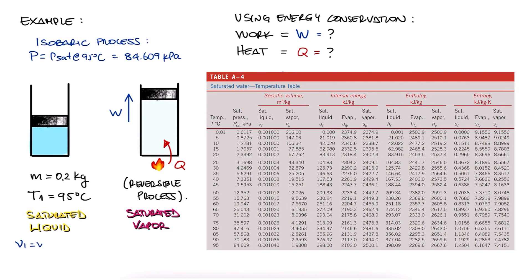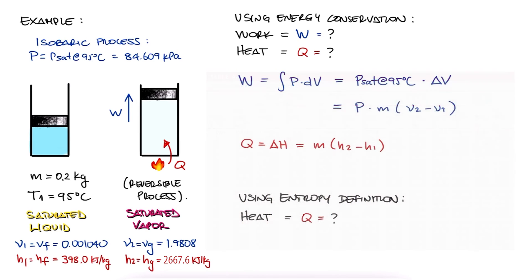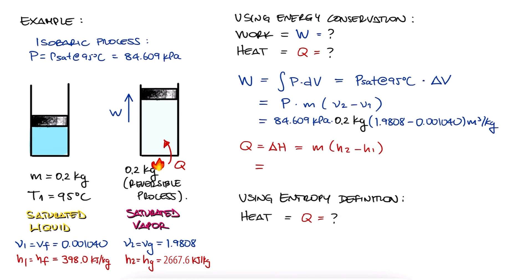We look up the saturation pressure for 95C, the specific volumes with V1 being saturated liquid, Vf, and V2 being saturated vapor, Vg, and also the specific enthalpy values Hf for H1 and Hg for H2. We substitute the values and find a work value equal to 33.5 kilojoules, and a heat transfer value equal to 453.9 kilojoules.